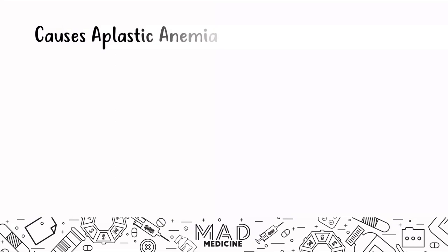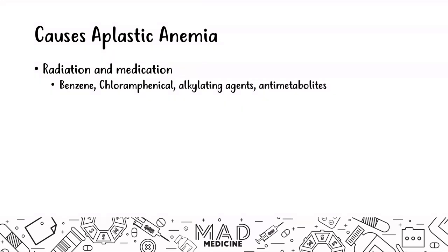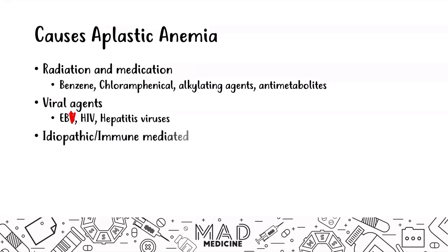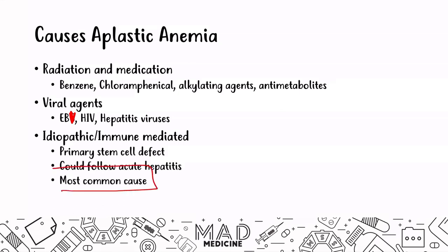Causes of aplastic anemia include radiation and medications such as benzenes, chloramphenicol, alkylating agents, and antimetabolites. These agents target rapidly dividing cells, including those in the bone marrow, leading to aplastic bone marrow. Viral agents like EBV, HIV, and hepatitis can also cause it. Idiopathic and immune-mediated causes — involving a defect in primary stem cells — are actually the most common cause, and can follow acute hepatitis.